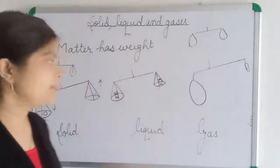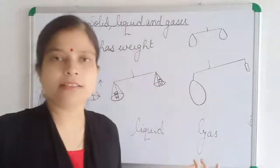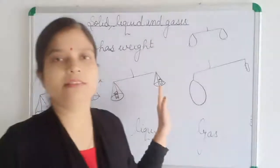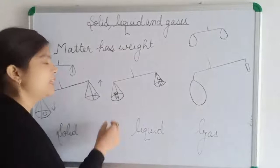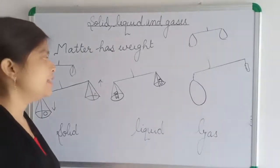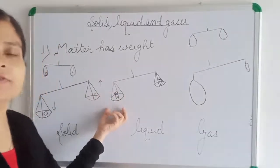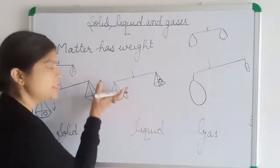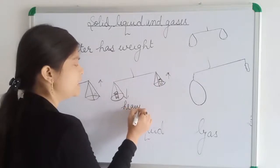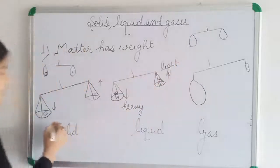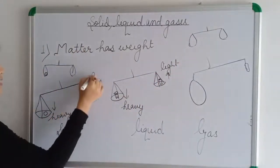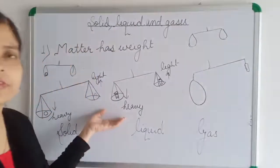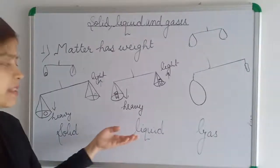Now we can do the same experiment with liquid. On one side of the balance, place an empty glass with no liquid in it. On the other side, place a glass with some water in it. You will find that the side with the glass of water goes down. This means the glass with water is heavier than the empty glass, which shows that liquid — water — has weight.